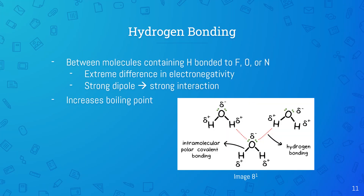Hydrogen bonding occurs between molecules containing a hydrogen bonded to fluorine, oxygen, or nitrogen. These three atoms are especially electronegative compared to hydrogen, so they will create a particularly strong dipole, resulting in a stronger interaction between molecules. The presence of hydrogen bonding in a molecule indicates a high boiling point, since it will take a lot of energy to overcome this interaction. Here is an example of a hydrogen bond.